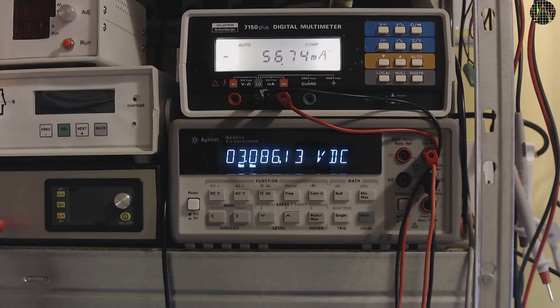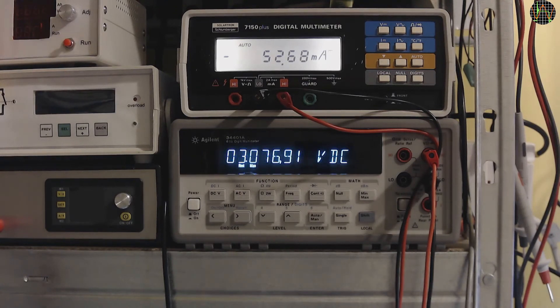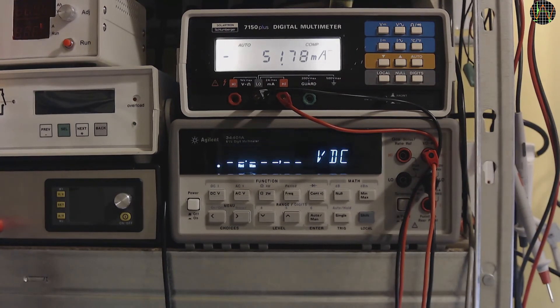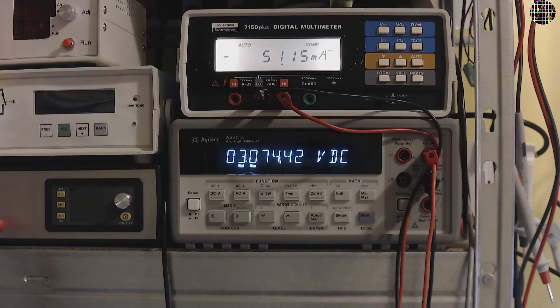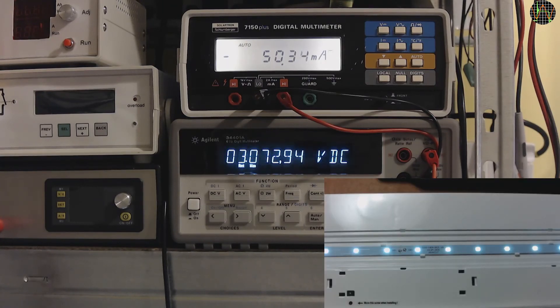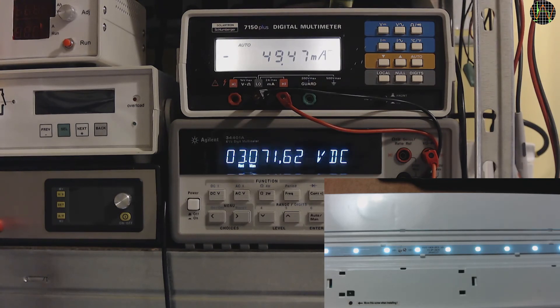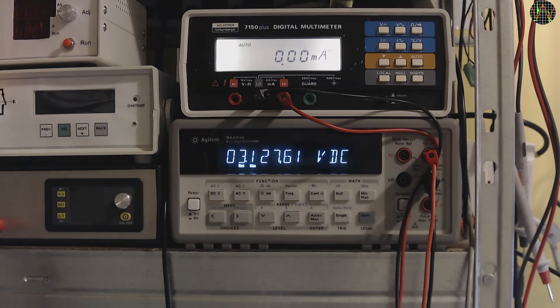Since the discharge took many hours, I switched to bench multimeters. The current is measured by the Solartron 7150 Plus. The 34401A is in remote control mode, measuring and recording the voltage every 10 seconds. What you see here is the final moments in time-lapse. The final voltage is 3.07V, which means a cut-off at 1.02V per cell. I am much more comfortable with that.